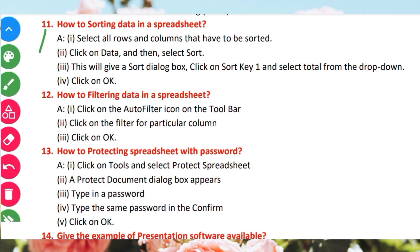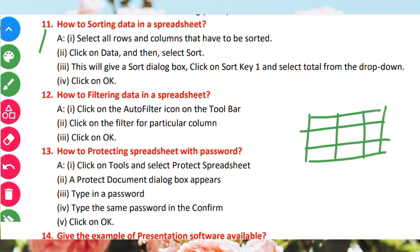First, select all rows and columns that need to be sorted. Click on Data and then select Sort. This will give you a Sort dialog box. Click on Sort Key 1, press the keyboard and select the column total from the drop-down, then click OK.